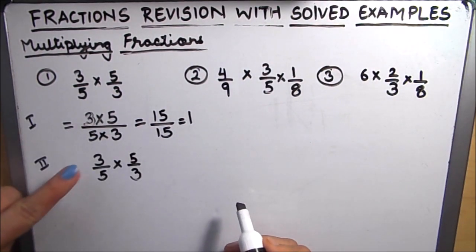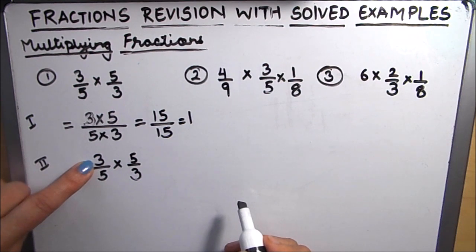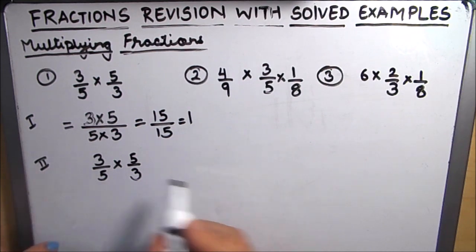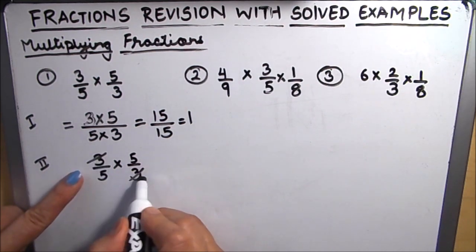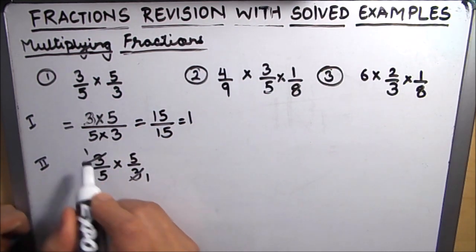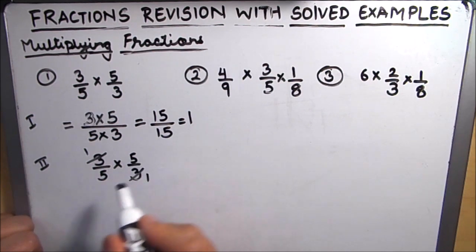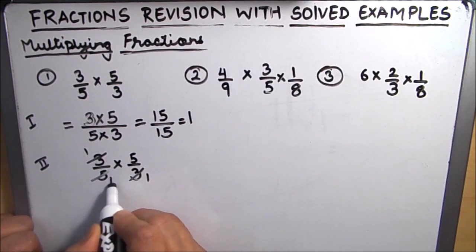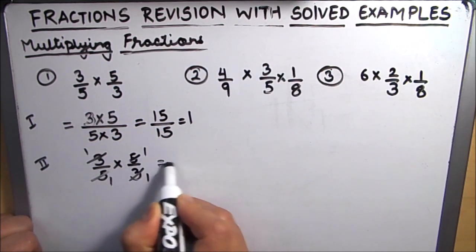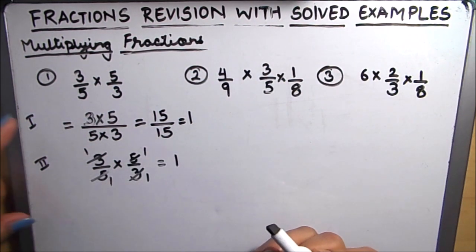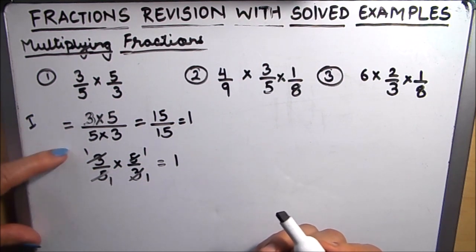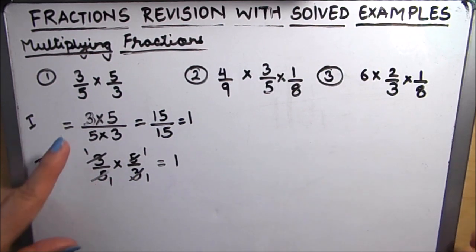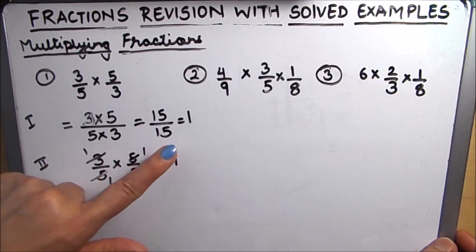The other way is to cancel before multiplying. We can take the 3 in the numerator and the 3 in the denominator of the other fraction and divide them — 3 divided by 3 is 1. Similarly, the 5 in the denominator and numerator also cancel to 1. So our final answer is 1. These are the two ways we can do multiplying fractions — we can cancel similar terms first or multiply and then reduce.